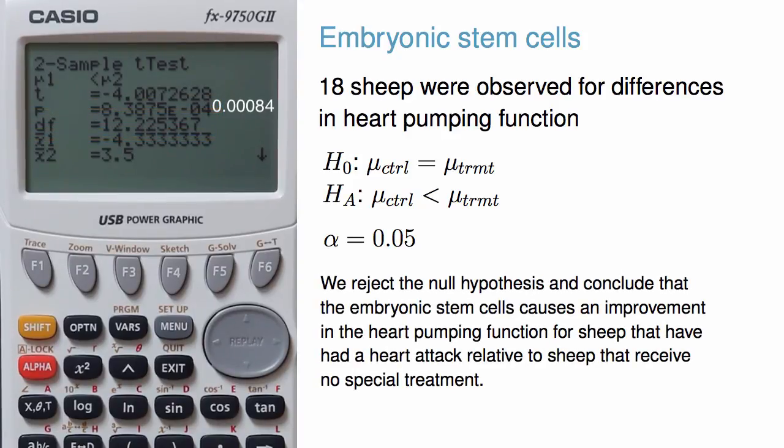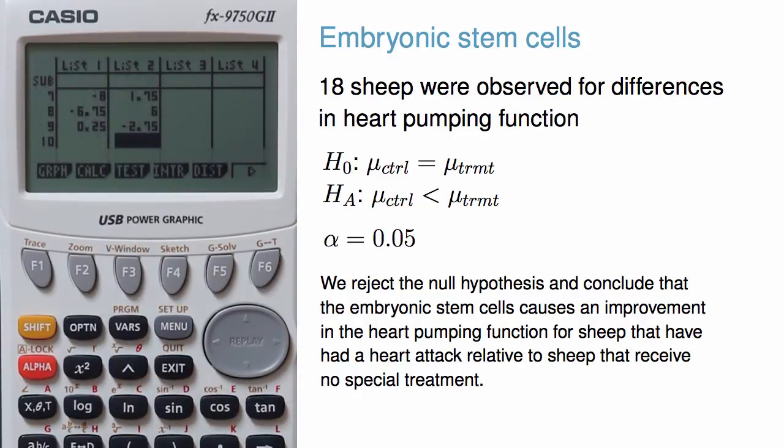Because the p-value is so small, we reject the null hypothesis and conclude that the embryonic stem cells causes an improvement in the heart-pumping function for sheep that have had a heart attack relative to sheep that receive no special treatment. Now that I've completed the hypothesis test, I can exit out to the main stat page.